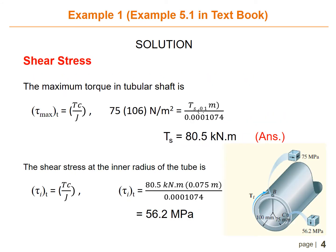For the maximum torque in the tubular shaft, we use the same formula: tau_max equals T times c over J. Substituting tau_max equals 75 times 10 to the power of 6 newtons per meter squared, c equals 0.1 meters, and J equals 0.0001074 meters to the power of 4, we can solve for the maximum torque for the tubular shaft, which equals 18.5 kilonewton meters.